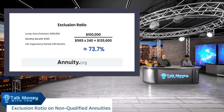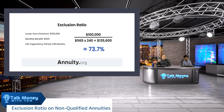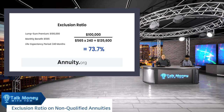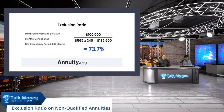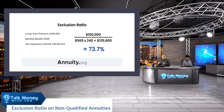That benefit is based on your life expectancy and current interest rates. What you're trying to figure out is how much of my $565 is going to be taxable versus how much is just a return of my $100,000. So what they do is take your life expectancy — in this case 240 months — and multiply it times $565, which gives you $135,600. That $35,600 was your gain over that period of time.